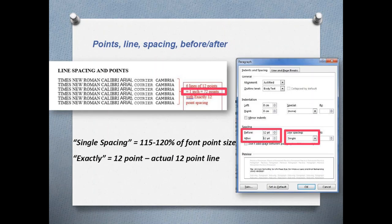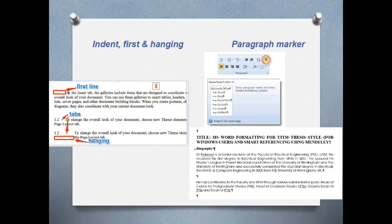Moving to indent: first line and hanging. For a paragraph, you can define left, right, and special indentation. First line indentation only defines the indentation of the first line of the paragraph. If it's a hanging indent, it defines the spacing for all the following lines — other than the first line. This is known as the hanging indent.